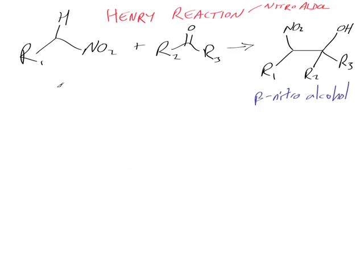Let's have a look at the mechanism. We take a nitro alkane — I'll put a proton on here in blue. This proton probably has a pKa in the area of about 10, so we just need a subtle base. The base picks up that proton — it's quite an acidic proton, and the pKa will go down if there are more stabilizing groups like a carbonyl or ester. So the first thing to do is deprotonate there.